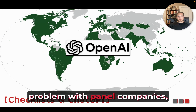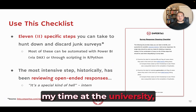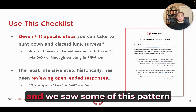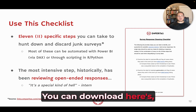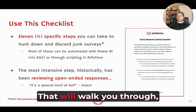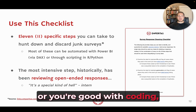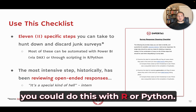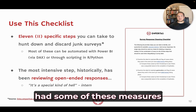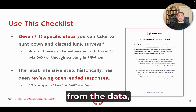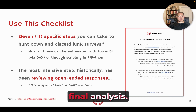Knowing this was the problem, how did we solve it? Two proactive steps. The first is an 11-step checklist developed during my time at the university when we were early adopters of Qualtrics and first saw these patterns. You can download it for free at the link in the bottom left. Some steps can be automated with scripting — Power BI with DAX, R, or Python. The panel companies, to their credit, had some measures in place, but as you can see from the dashboards, half of what we got every time was still not usable for final analysis.